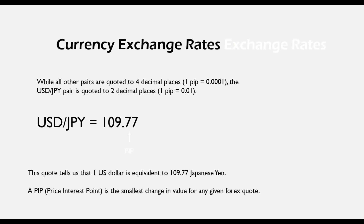The U.S. dollar/Japanese yen pairing is the only one that is quoted in two decimal places. In other words, 109.77 — that's what it was when we bought the pairing. One pip is the seventh decimal right here, so there were seven pips. A pip is the price interest point — it's the smallest change in value for any given Forex quote. For the U.S. dollar/Japanese yen pairing, that is the second decimal point. The quote tells us that one U.S. dollar is equivalent to 109.7 Japanese yen.